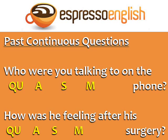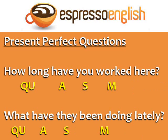In the past continuous, the auxiliary verb is 'were' or 'was'. Who were you talking to on the phone? How was he feeling after his surgery? This formula also works with present perfect questions.